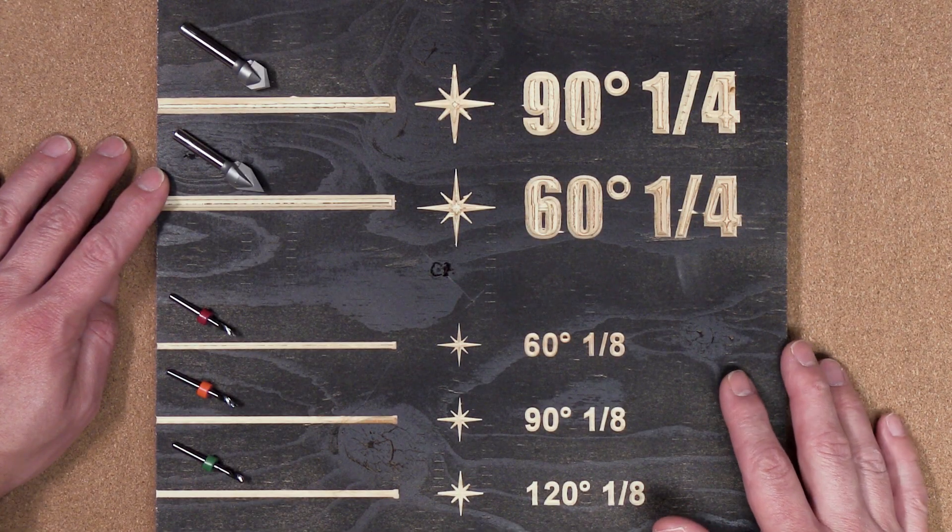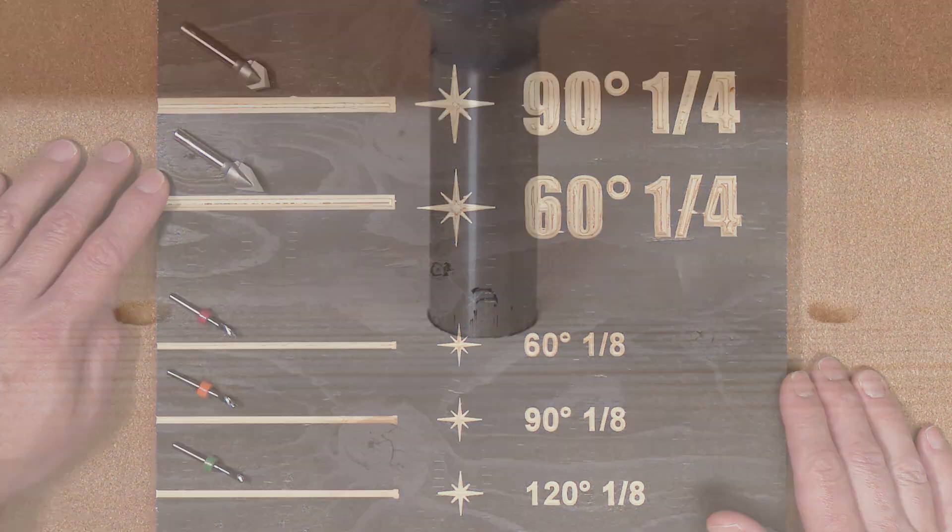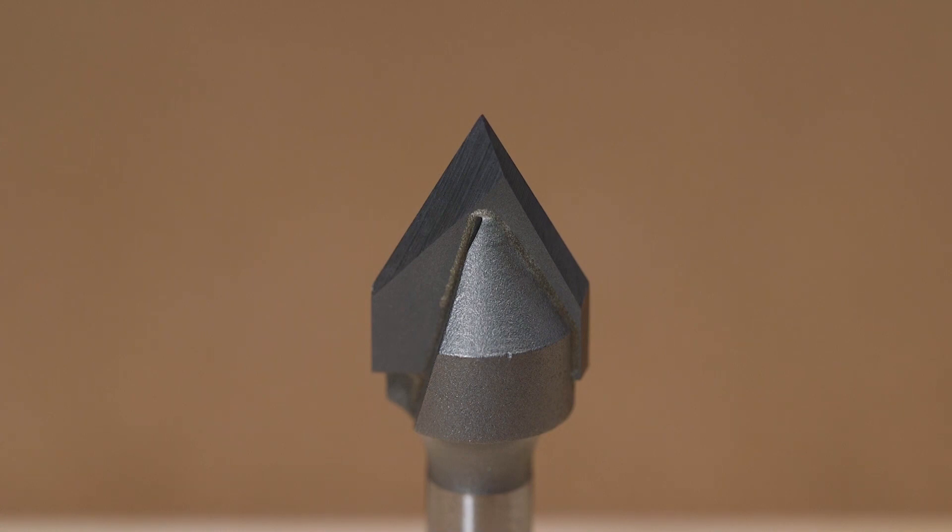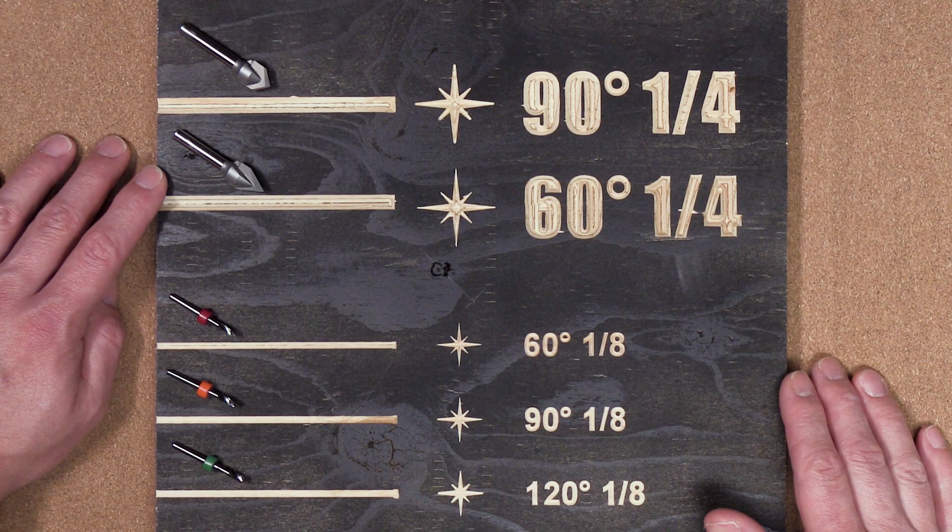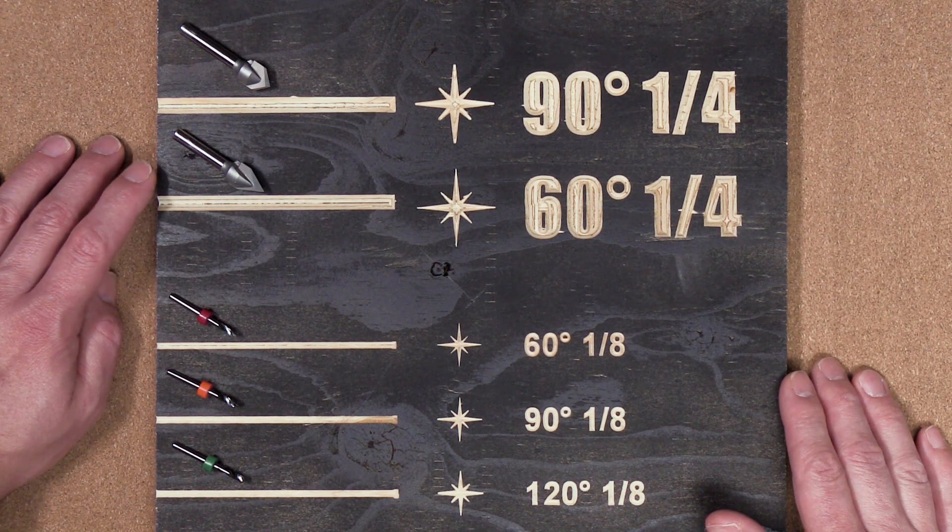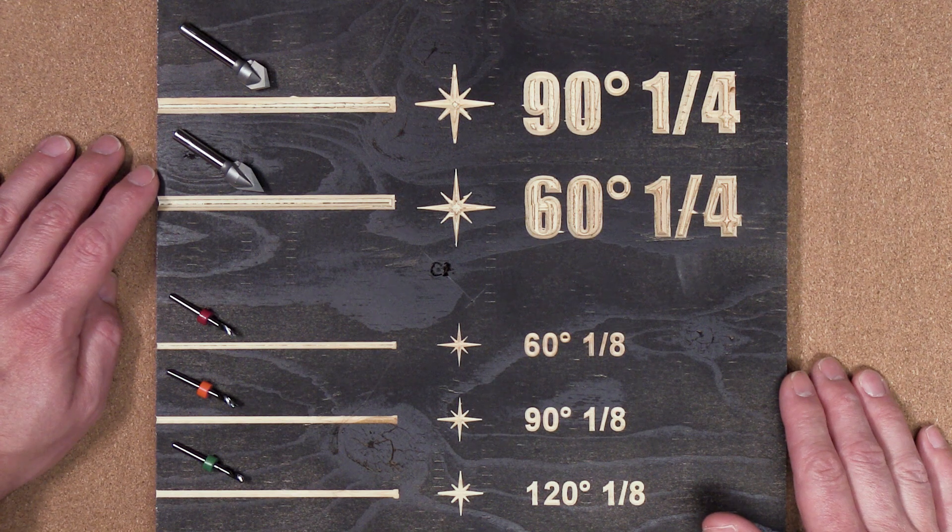The next bit we're going to move on to is the 60 degrees quarter inch shaft, half inch head V-bit. As you can see, this V-bit has a much finer point compared to the 90 degrees bit. In this cutting process you should pay attention to the amount of cuts the 60 degree bit has to do compared to the 90 degree bit for the same results.